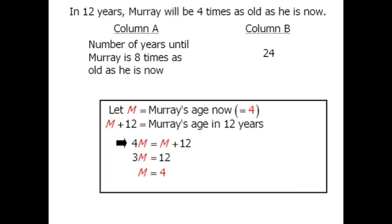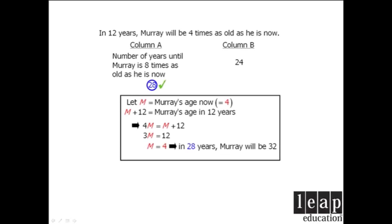The question asks us how many years until Murray is 8 times as old as he is now? In other words, until he is 32 years old. Well, it will take 28 years for Murray to be 32, so column A is equal to 28, in which case it is greater than column B, and our answer is A.